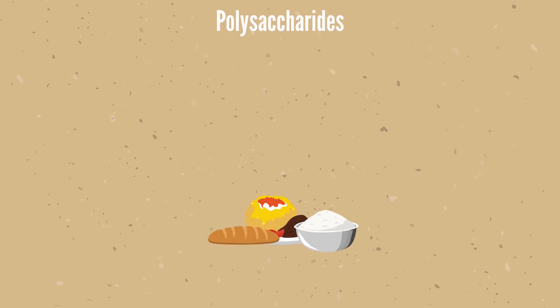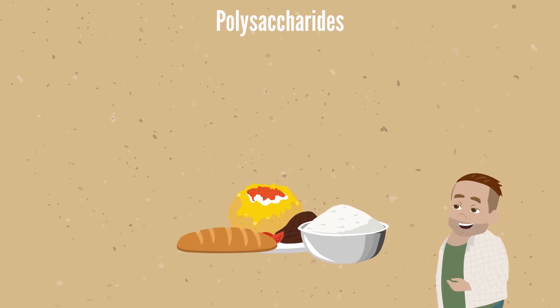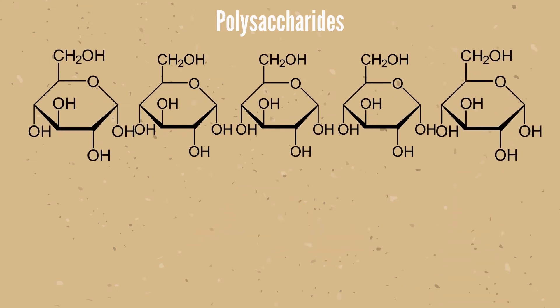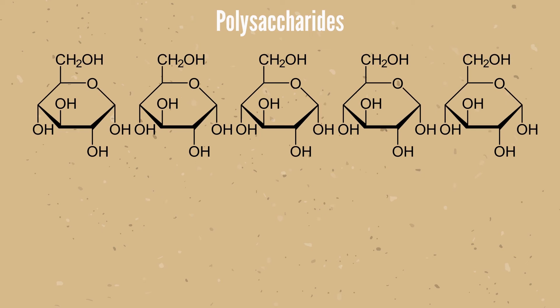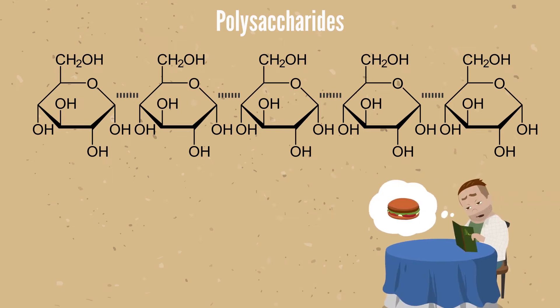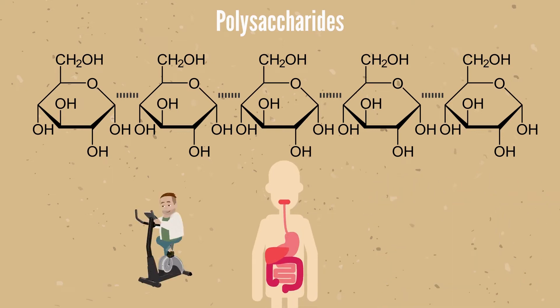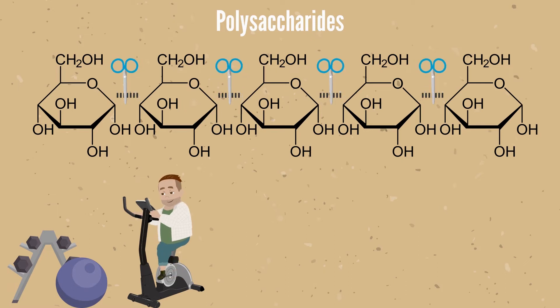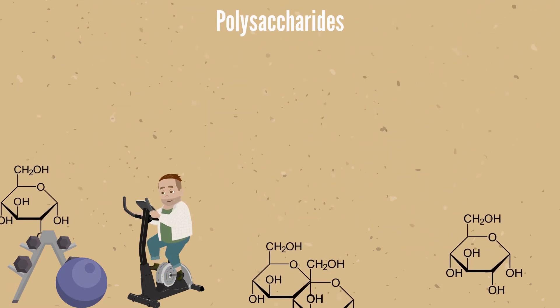Polysaccharides are the most abundant carbohydrates found in food. They are long-chain polymeric carbohydrates composed of monosaccharide units bound together by glycosidic linkages. Some types of polysaccharides function as short-term energy storage molecules. When an organism requires energy, the polysaccharide is broken down to release sugar molecules.